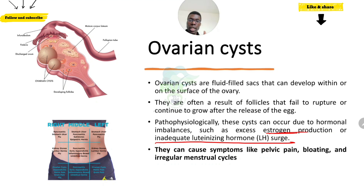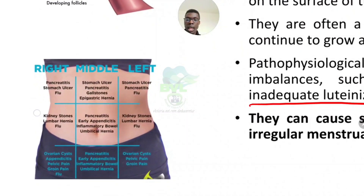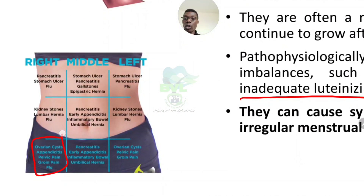So ovarian cysts simply means the follicle refuses to rupture. It can be so bad that the whole ovary becomes inflamed and swells up — sometimes the ovary might need to be removed. One of the most common symptoms is pain felt around the pelvic region. Depending on whether it is the right or left ovary affected, that's where you feel the pain, because the female reproductive system sits in that lower abdominal area.